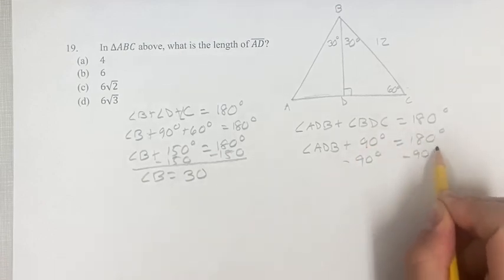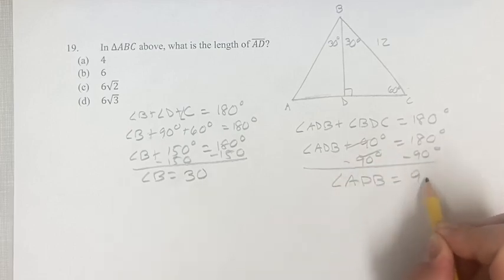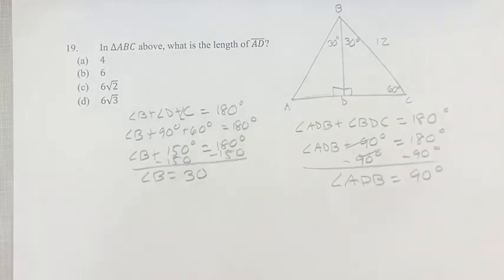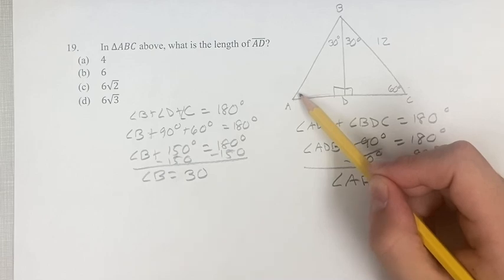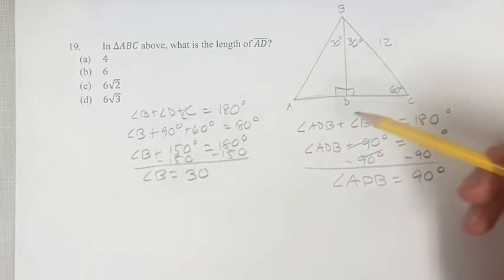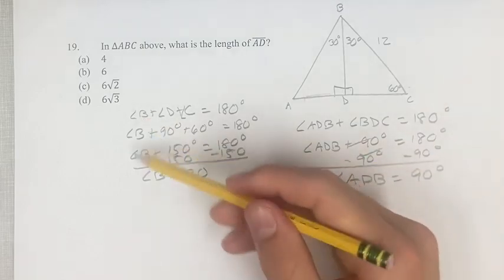Subtracting 90 from both sides, angle ADB is equal to 90 degrees. So it is also right. And then a similar thing here, where we have the last angle of a triangle is unknown.